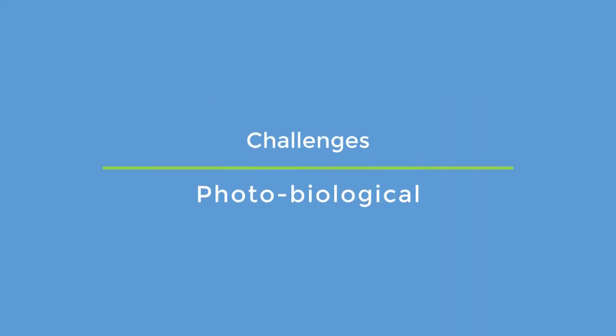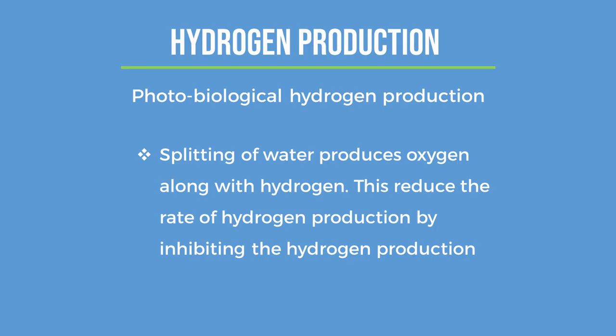A key challenge is that splitting water produces oxygen along with hydrogen, which reduces the rate of hydrogen production by inhibiting the process. Researchers are working to develop new methods to increase the rate of hydrogen production.